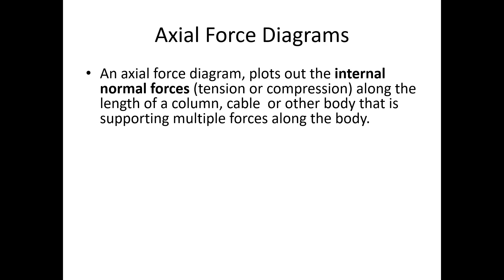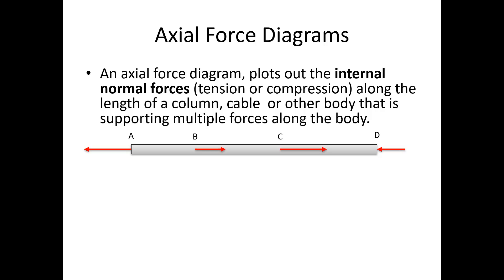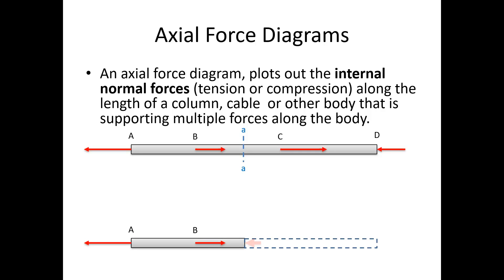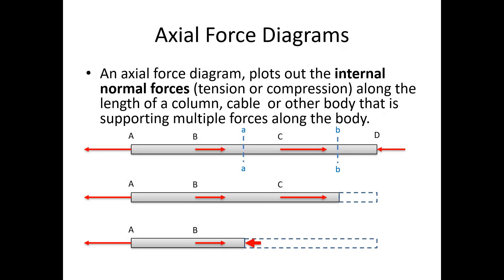Alright, so with the axial force diagrams let's start there. Axial force diagrams plot out the internal normal forces — again the tension or compression — along the length of the column, cable, or other body that's supporting multiple forces along the direction of that body. So imagine we've got some beam with forces at A, B, C, and D, all acting along the length of the beam. If I want to know the internal forces at cross-section A, I could look at the right half and figure out that internal normal force. If I want to know B, I would have to do a second analysis. So you can see doing this one point at a time is a bit difficult.